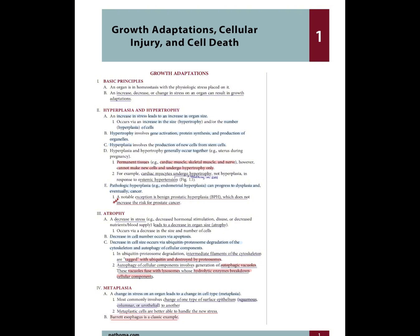Hyperplasia and Hypertrophy: An increase in stress leads to an increase in organ size, occurring via an increase in size (hypertrophy) and/or the number of cells (hyperplasia). Hypertrophy involves gene activation, protein synthesis, and production of organelles. Hyperplasia involves the production of new cells from stem cells. Hyperplasia and hypertrophy generally occur together — for example, the uterus during pregnancy.